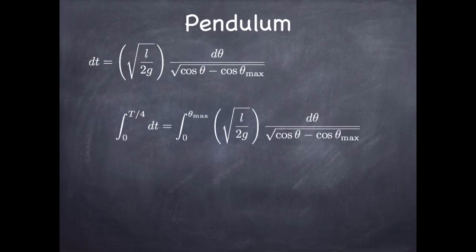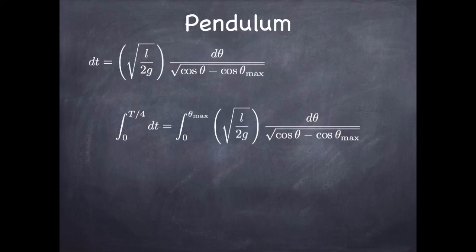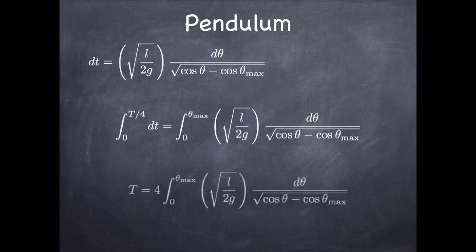We can push on this and find an expression for the period as a function of amplitude. If we integrate both sides from 0 to the maximum angle, integrating from 0 to θ_max spans a quarter of a period, because over a full swing the pendulum goes through four of those maximum-angle displacements: 0 to θ_max, θ_max to 0, 0 to −θ_max, and −θ_max back to 0. So that integral is a quarter period, meaning the full period is four times that integral. We've recast the pendulum period problem into a numerical integration problem.